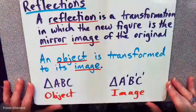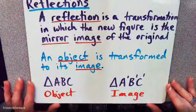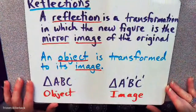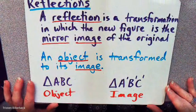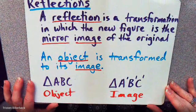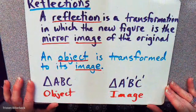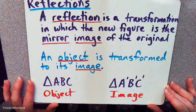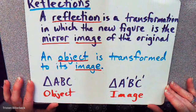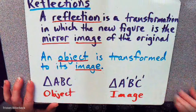Let's look at reflections. A reflection is a transformation in which the new figure is the mirror image of the original — an object is transformed to its image.